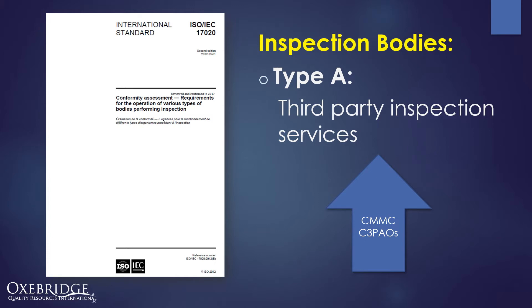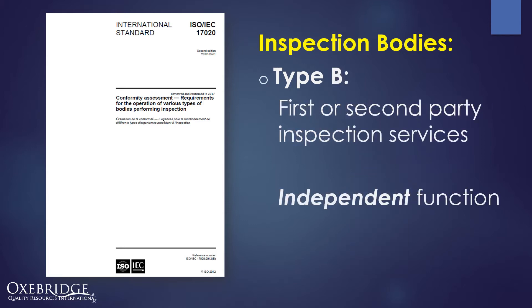The ISO 17020 standard talks about three types of inspection bodies. Type A is for third-party inspection service bodies — this would be for CMMC C3PAOs. You are a third-party inspection body, meaning you are inspecting the processes of someone else that you are unrelated to. Type B is for those that perform first- or second-party inspection, either for themselves or on behalf of their customers, where the inspection body is an independent function. This would not be applicable to the CMMC scheme.